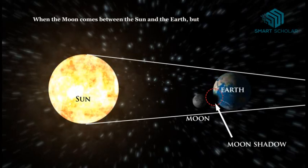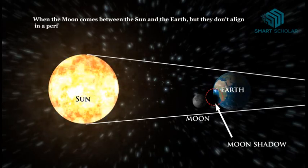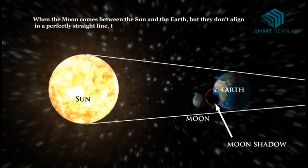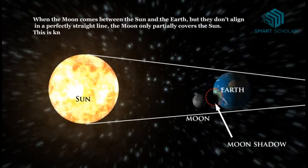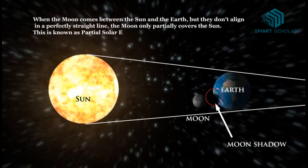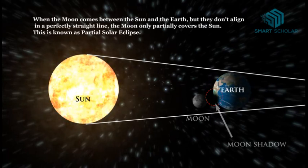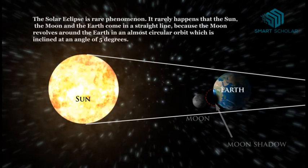This phenomenon is called a total solar eclipse. When the moon comes between the Sun and the earth but they don't align in a perfectly straight line, the moon only partially covers the Sun. This is known as a partial solar eclipse. The solar eclipse is a rare phenomenon — it rarely happens that the Sun, the moon, and the earth come in a straight line.